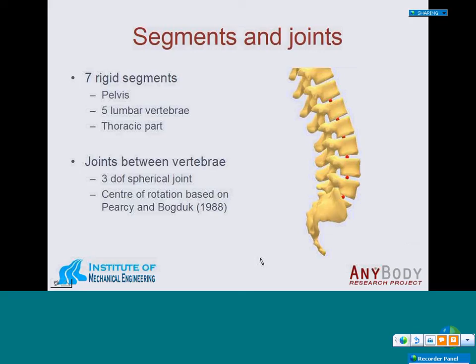Let's tell you more about the model in detail. The lumbar spine model consists of certain rigid segments: we have the pelvis, the five lumbar vertebrae, and the thoracic part, which is considered as rigid. The joints between the vertebrae are three-degrees-of-freedom ball joints — or at least they are modeled as such. The center of rotation is based on the work of Pearcy and Tibrewal from 1988, which is an important parameter because it determines the effective moment arms of the different muscles surrounding the lumbar spine.